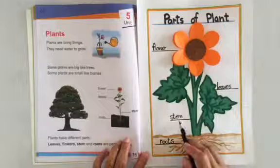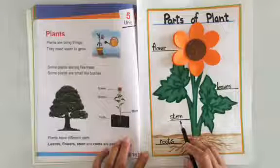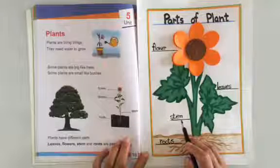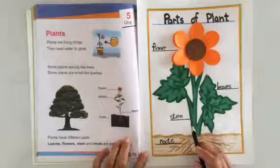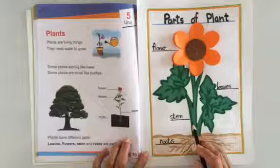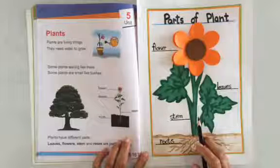The stem carries water and food to all parts of the plant. It bears leaves, flowers, fruit and vegetables.